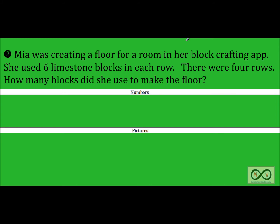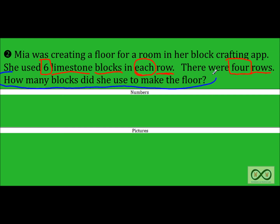Mia was creating a floor for a room in her block crafting app — really just story information. Second sentence: She used six limestone blocks in each row. Six limestone blocks in each row — that's a math clue. Next sentence: There were four rows. Absolutely correct — there were four rows. So we have six blocks in each row and four rows. And here comes the last sentence in question form: How many blocks did she use to make the floor? That's your math job.